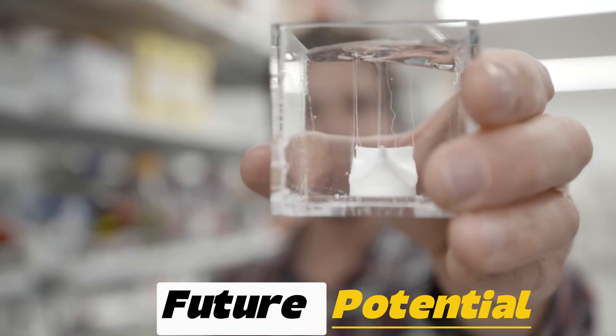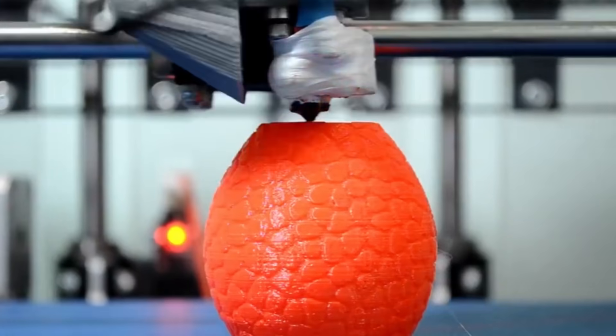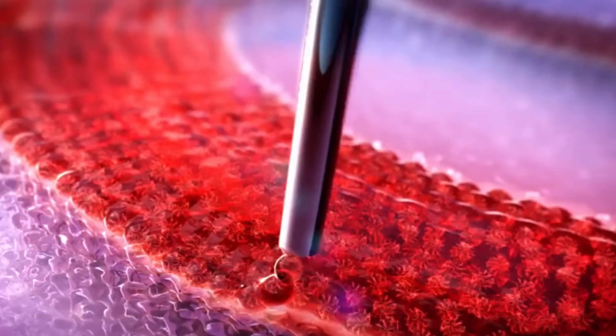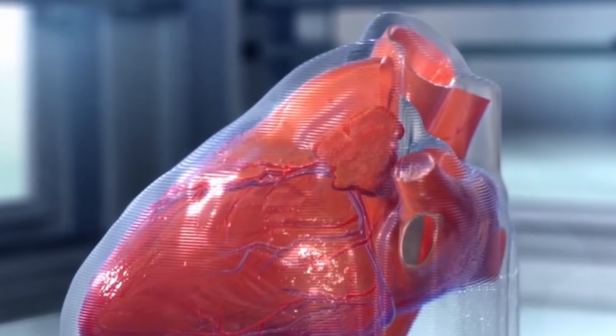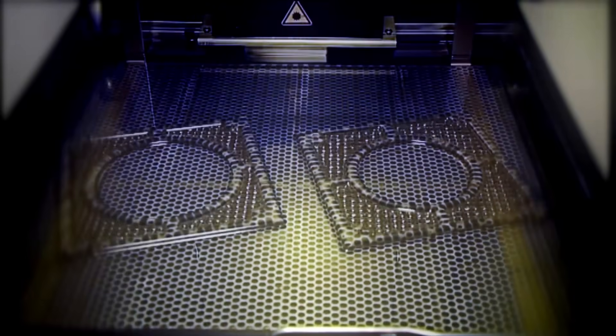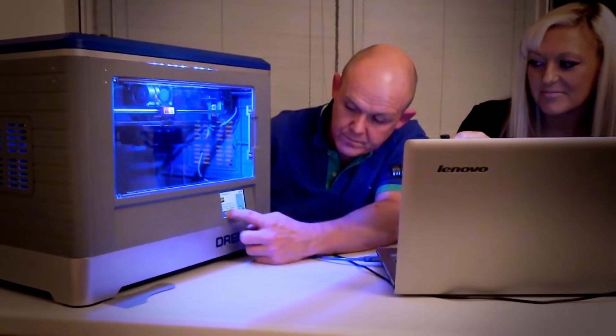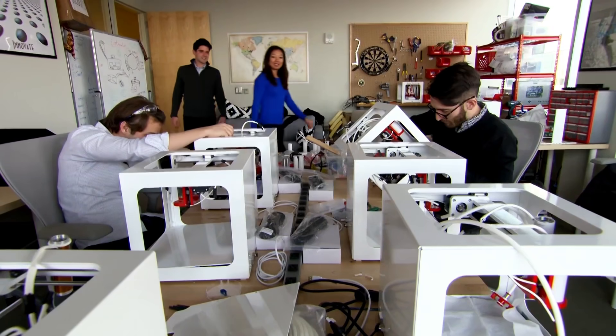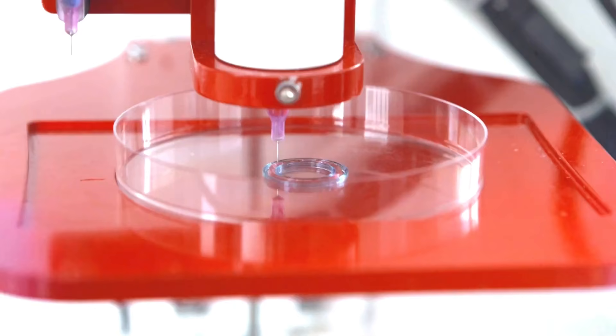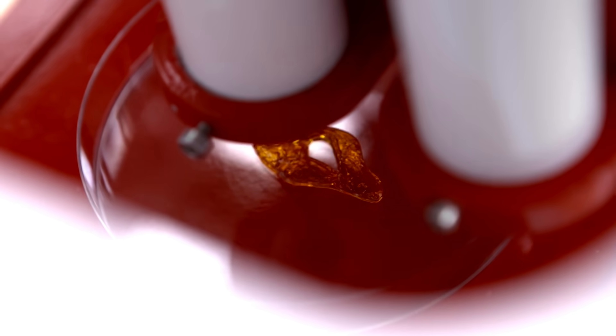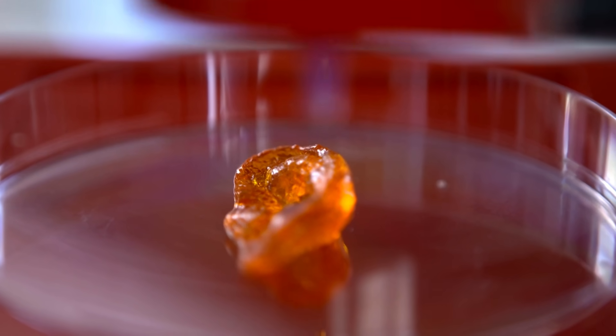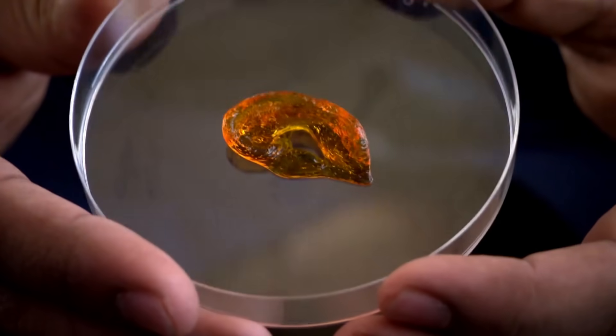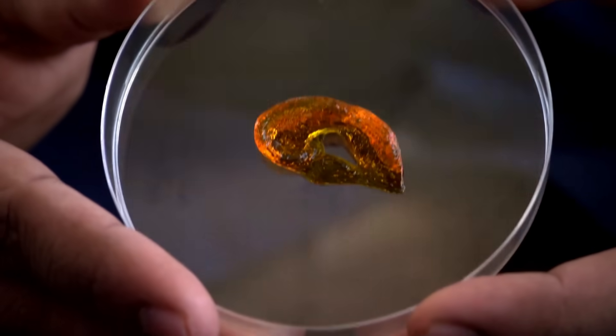Number one, future potential. The future potential of 3D bioprinting is vast, with the possibility of fully functional human organs being printed for transplantation within the next few decades. Researchers envision a world where patients no longer need to wait for compatible donors, as organs could be printed on demand using their own cells. Beyond organ replacement, this technology may enable the creation of hybrid or enhanced tissues that can repair or augment human capabilities. The integration of artificial intelligence, robotics, and advanced biomaterials will further accelerate the sophistication and reliability of bioprinted organs. In addition, the development of complete vascular and nerve networks within printed organs could lead to fully functional replacements capable of mimicking natural physiology.